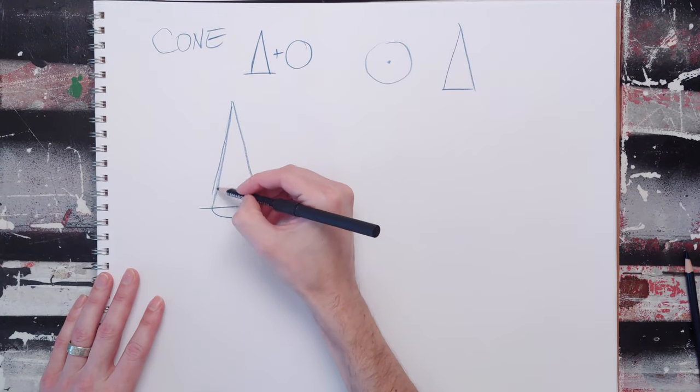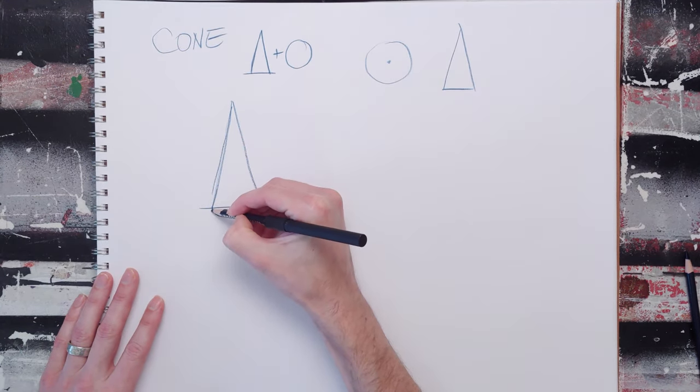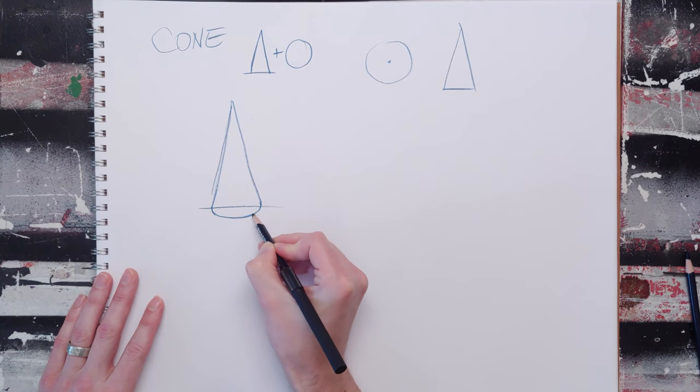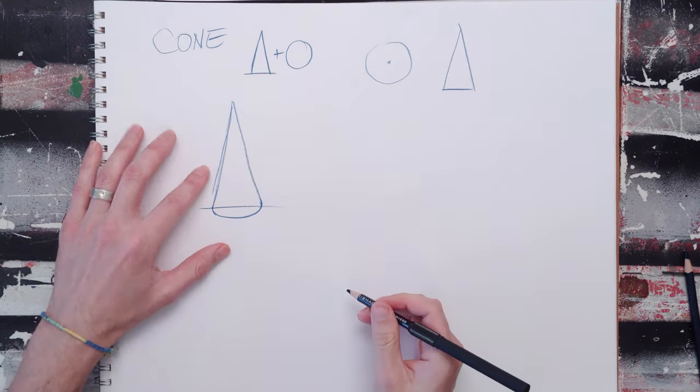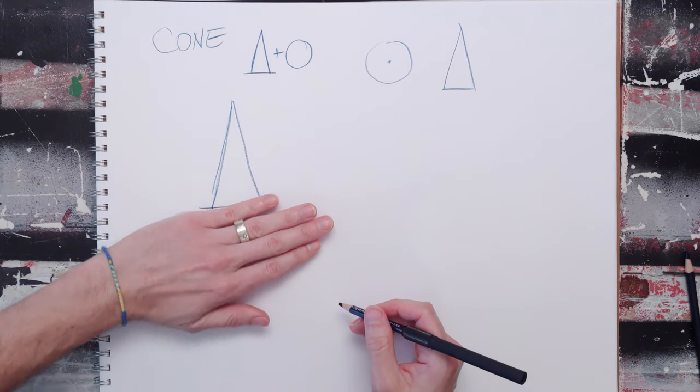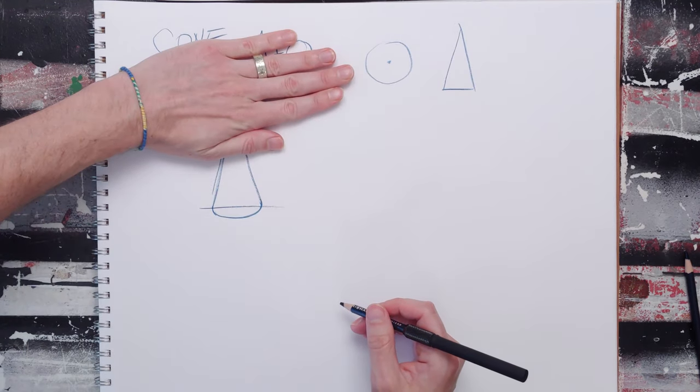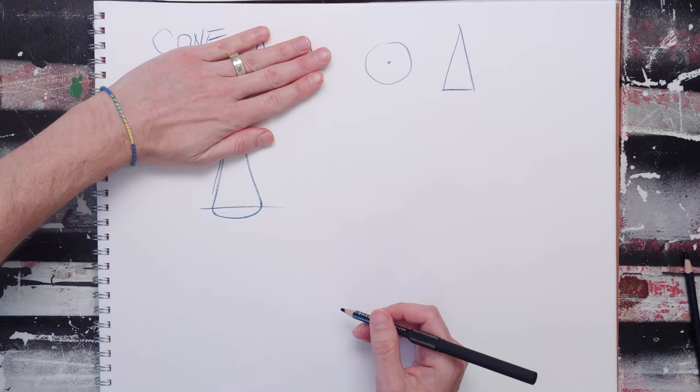What I like to do is come straight off the cone, arc around, and go straight back into that triangle. So now I buy myself a little dimension. Here it's flat, here it's dimensional.